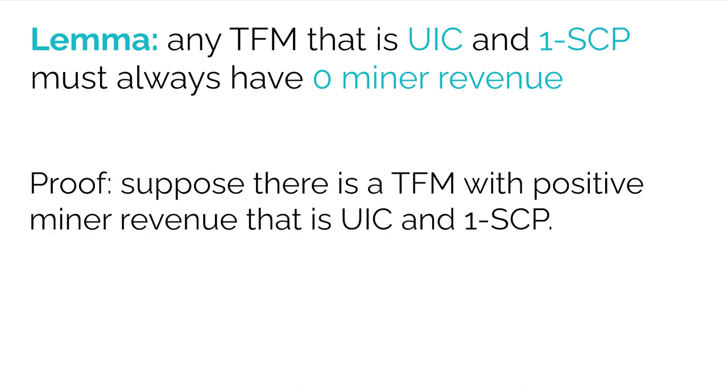The key lemma says: any mechanism that is UIC and 1-SCP must always have zero miner revenue — everything must be burnt. This key lemma holds regardless of whether the block size is infinite or finite. It's also interesting on its own because it says the burn rule in EIP-1559 is necessary — it's not an accident that 1559 burns everything. I'll prove this by contradiction. Suppose there is a transaction fee mechanism with positive miner revenue that satisfies both UIC and 1-SCP.